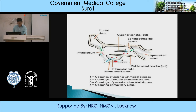If there is any blockage in the ostiomeatal complex, there will be blockage of the frontal sinus, anterior ethmoidal sinus, and maxillary sinus, creating impaired mucosal clearance and chances of sinusitis. If there is blockage in the superior meatus, there will be mucus collection in the posterior ethmoidal air cells. If there is disease in the spheno-ethmoidal recess, there will be impaired mucociliary clearance leading to isolated sphenoid sinus disease.